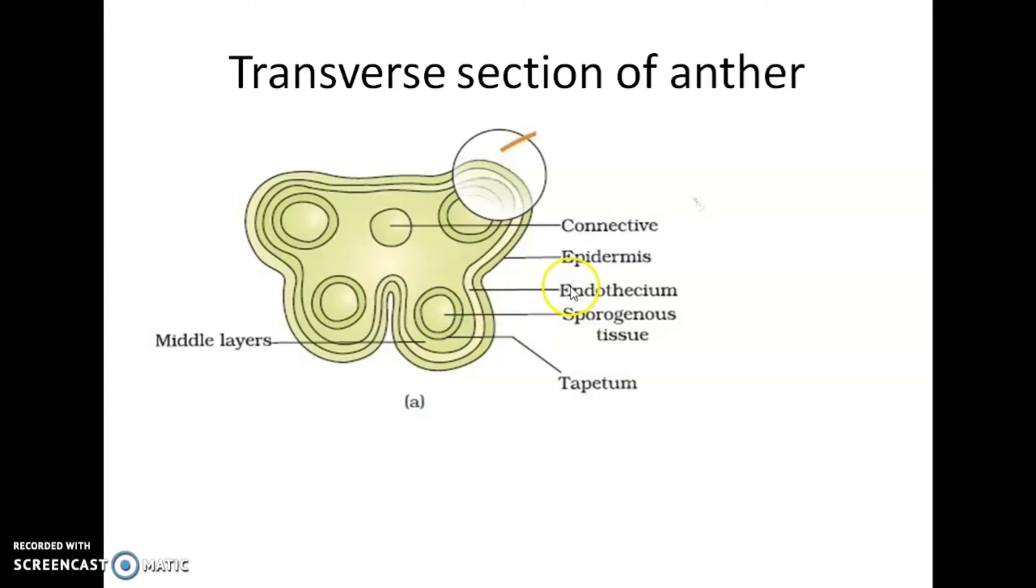You repeat with me: the first layer is epidermis, second one endothecium, third one middle layer, and the last one is tapetum. The outer three wall layers perform the function of protection and help in dehiscence of anther to release the pollen. Which are the outer three layers? Epidermis, endothecium, middle layer. They are protective in function and help for dehiscence of anther, that means the breakdown of anther for the release of pollen grains.